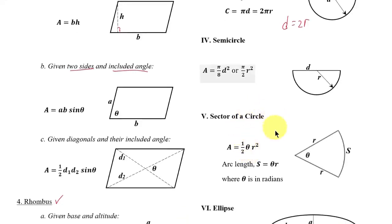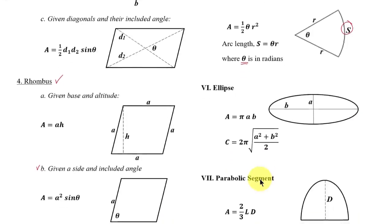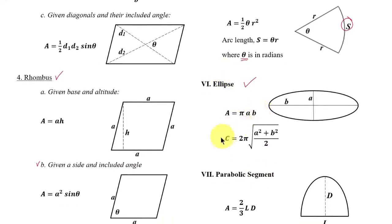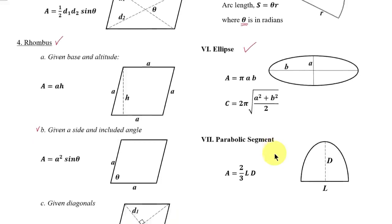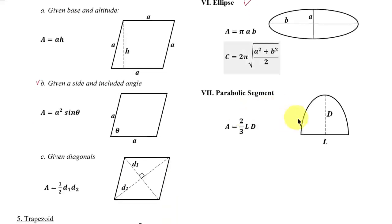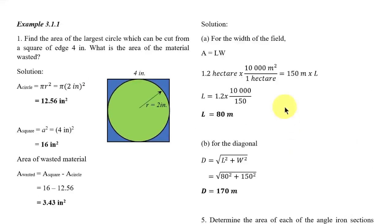Number five: sector of a circle. Area = ½ × θ × r², and the arc length s = θ × r. Note that θ must be in radians — if the given angle is in degrees, convert it to radians first. Number six: ellipse. Area = π × a × b; circumference ≈ 2π × √[(a² + b²)/2]. Number seven: parabolic segment — half of a parabola. Area = (2/3) × l × d.